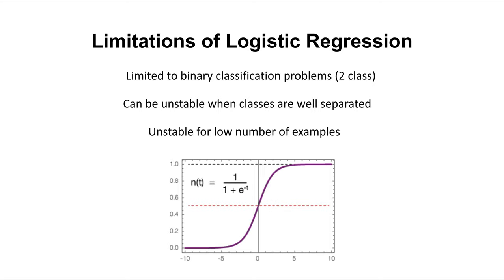Another limitation of logistic regression is that it can be unstable when the classes are well separated. Going back to the cat versus dog example, that's a stable problem because you can have a very clear decision boundary. But for some very well-separated classes, logistic regression is much more unstable. Additionally, logistic regression is unstable for a low number of examples — if you have a really small amount of training data, logistic regression isn't the best option because using the sigmoid curve for probability isn't going to perform well.